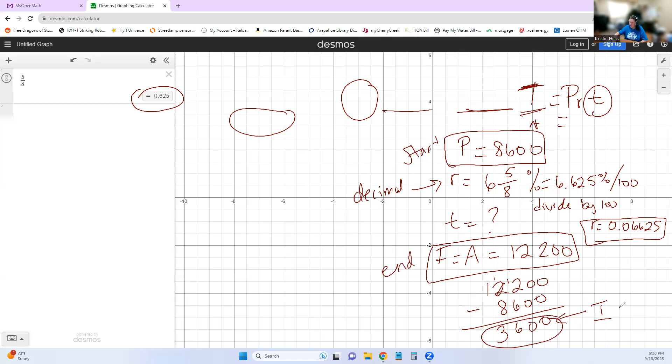So this right here is our I. So now we're going to set up our problem. I'm going to erase a little bit here so I have some room. So our formula is PRT is equal to I. We know that I'm going to go all the way over here. I is 3,600. Our starting value, our present value is 8,600. Our interest rate was 0.06625 times what we're looking for.